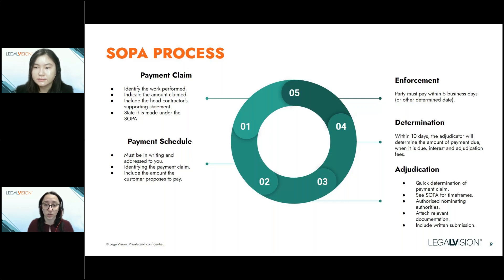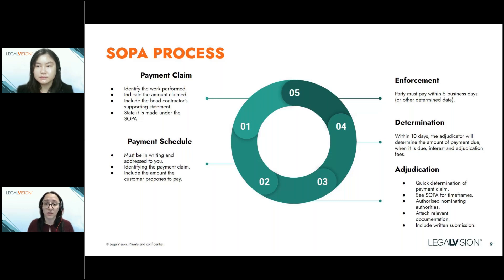There are a number of different organisations that provide adjudication services. Sometimes they're stipulated by the contract, but if not, you have options to choose from a range of adjudication providers available online. When you prepare an adjudication application, you also need to serve it on the respondent during normal business hours at their ordinary place of business and keep a record of how and when it was served. Depending on whether a payment schedule has been issued, the respondent will also have an opportunity to put on a response with supporting documents and written submissions.